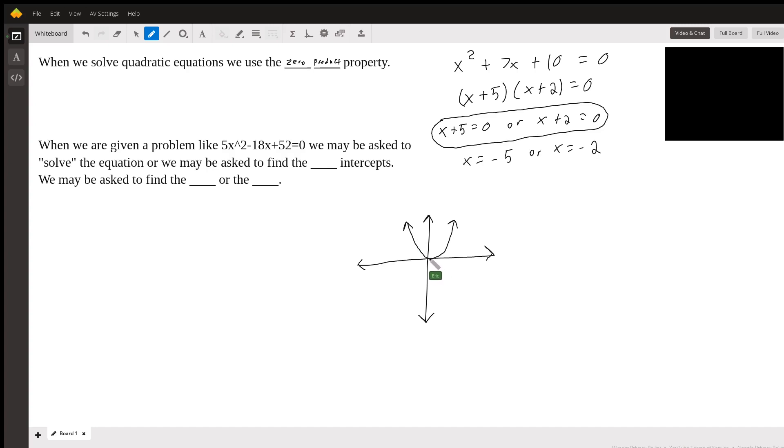So if it intersects at one point, you're going to have one solution. If it doesn't intersect, you're going to have no solutions. If it intersects at two points, you're going to have two solutions. Now these are called the x-intercepts.